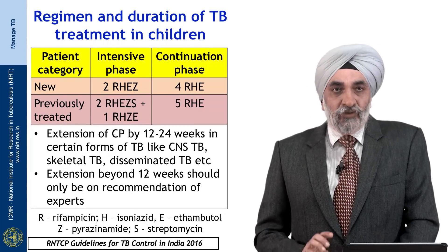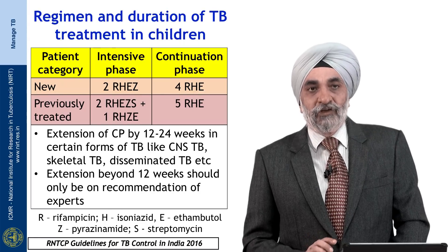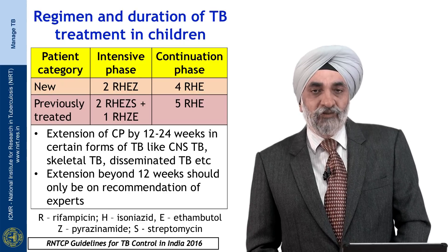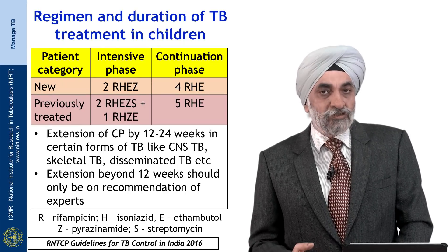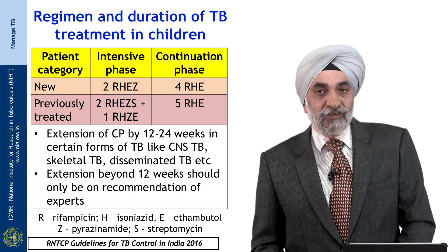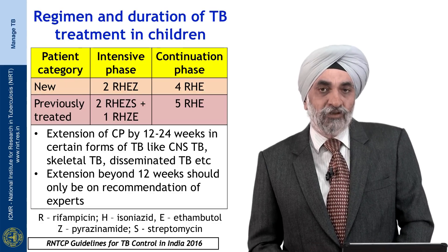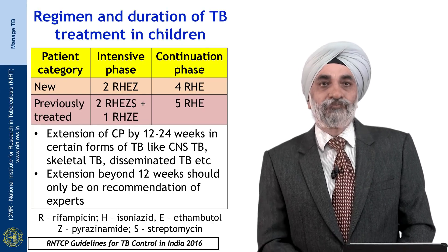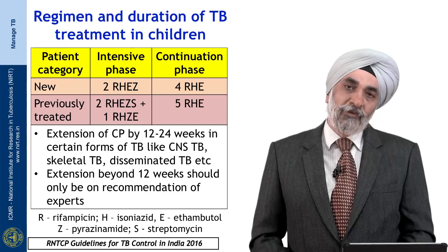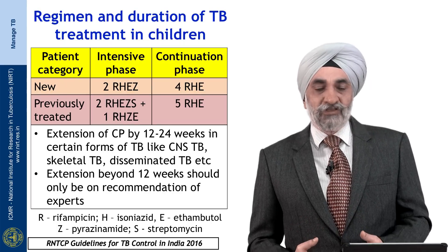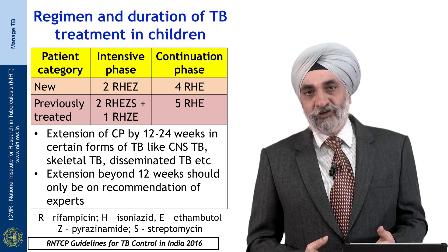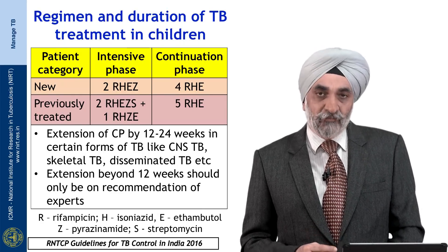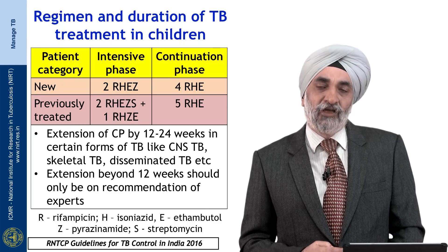Drug doses for children have largely been extrapolated from adult pharmacokinetic studies, but more recently pediatric pharmacokinetic studies suggest we need higher than currently used doses for most first-line anti-TB drugs. For a new case — either never treated or treated for less than 4 weeks — we need 4 drugs in the intensive phase: rifampicin, INH, ethambutol, and pyrazinamide.